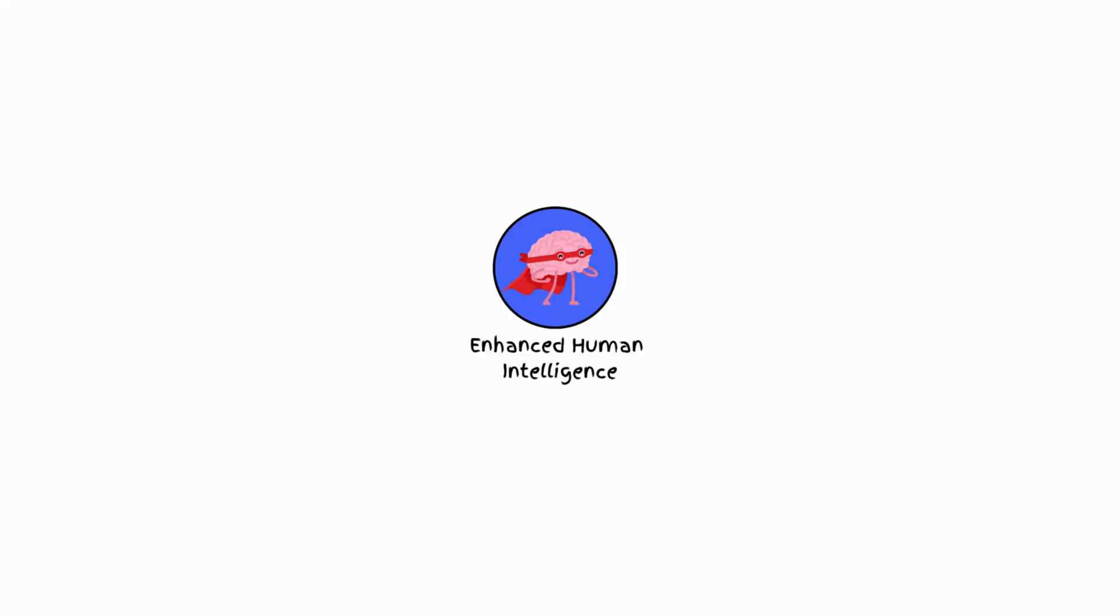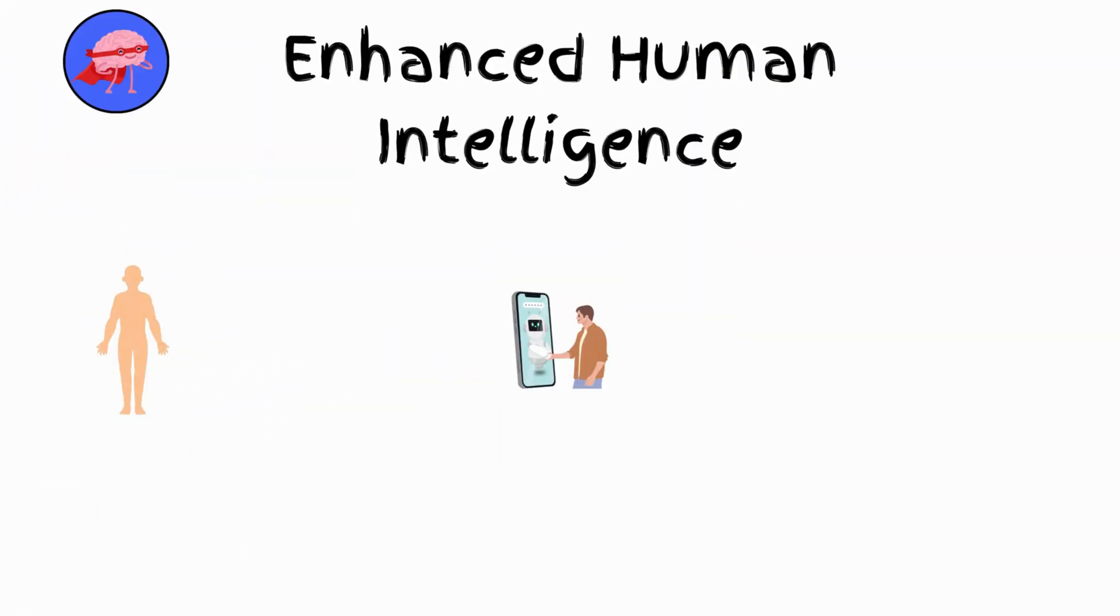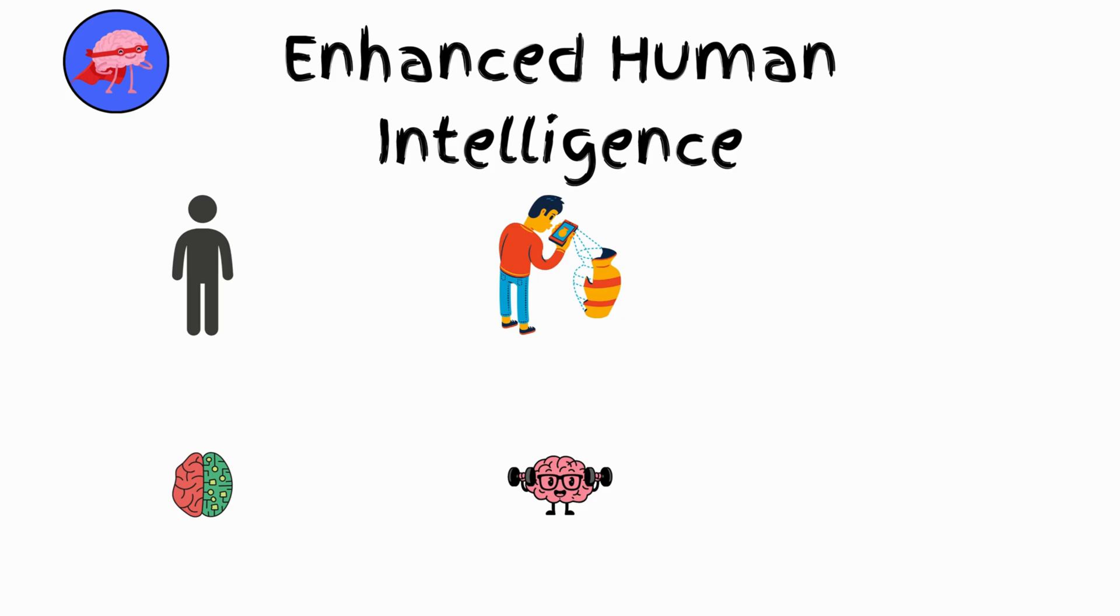Enhanced human intelligence. This is when humans use technology to enhance their cognitive abilities. Imagine people with brain implants to improve memory or augmented reality devices that provide real-time information.